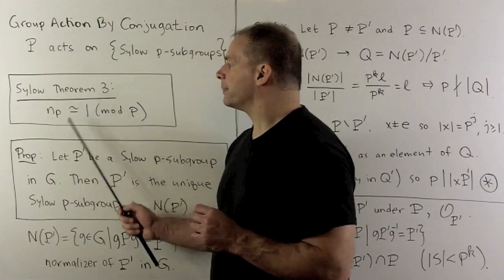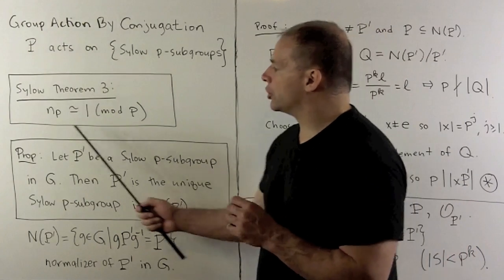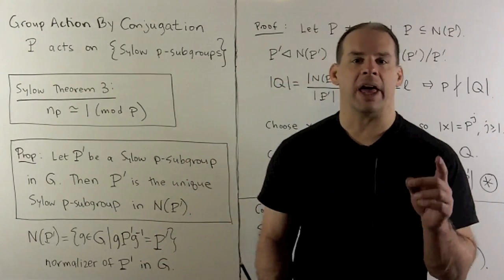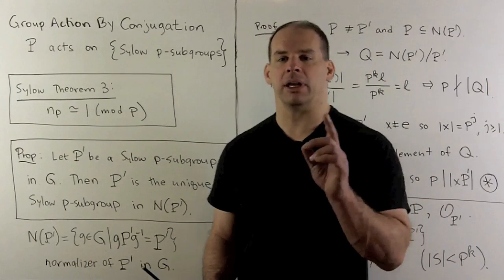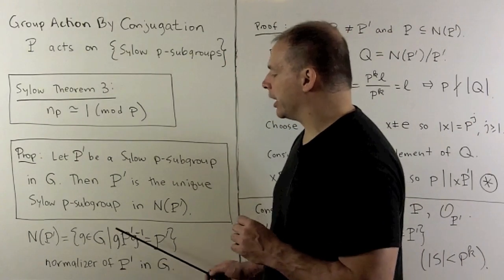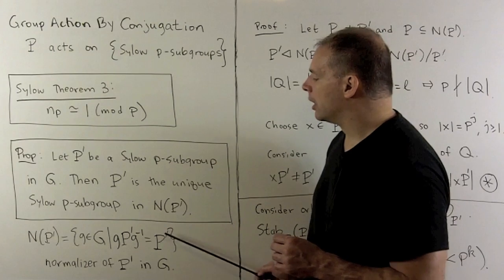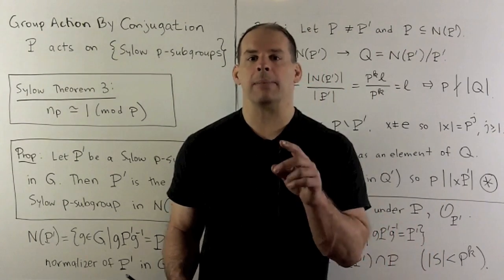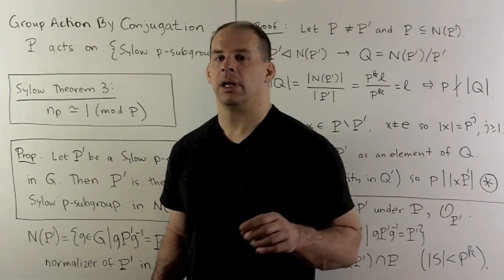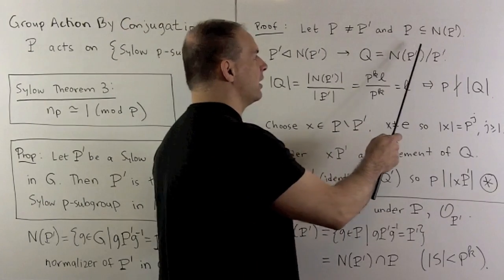The third Sylow theorem states: the number of Sylow p-subgroups is congruent to 1 mod p. To show this, we start with the following statement: if we have a Sylow p-subgroup P' in G, then P' is the unique Sylow p-subgroup in the normalizer of P'. Recall, the normalizer of P' is the subgroup of elements g in G such that conjugating P' by g gives P' back. This says the normalizer of P' is the largest subgroup of G that contains P' as a normal subgroup. For our proof, suppose we have another Sylow p-subgroup P such that P is contained in the normalizer of P'.